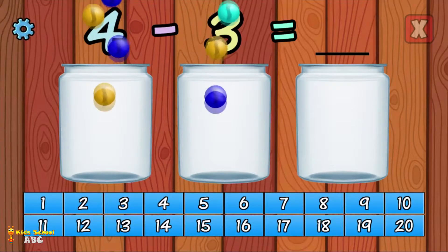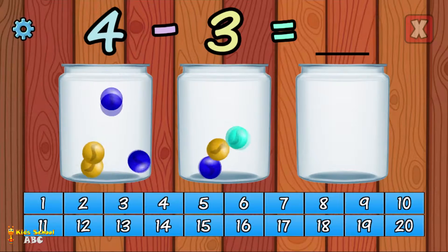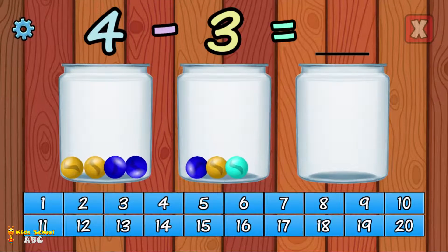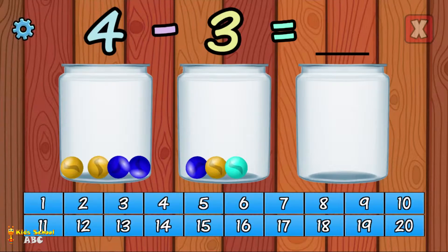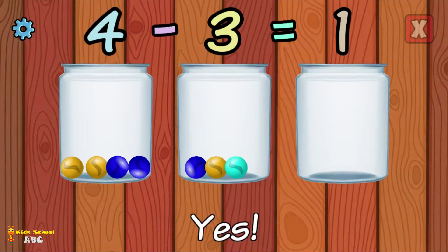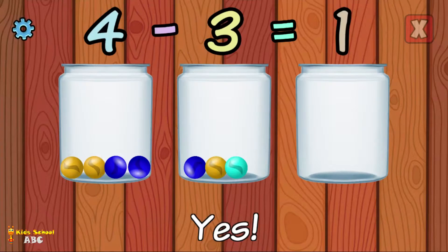What is 4 minus 3? Yes! 4 minus 3 equals 1.